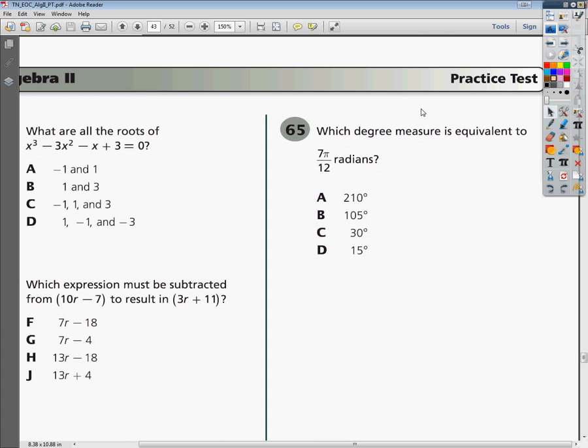Okay, this is the Algebra 2 practice test EOC, question number 65, the last one. And it reads, which degree measure is equivalent to 7 pi over 12 radians?